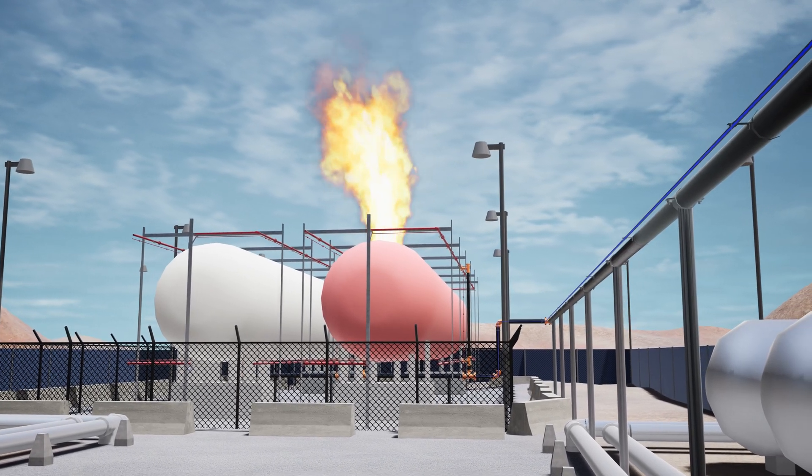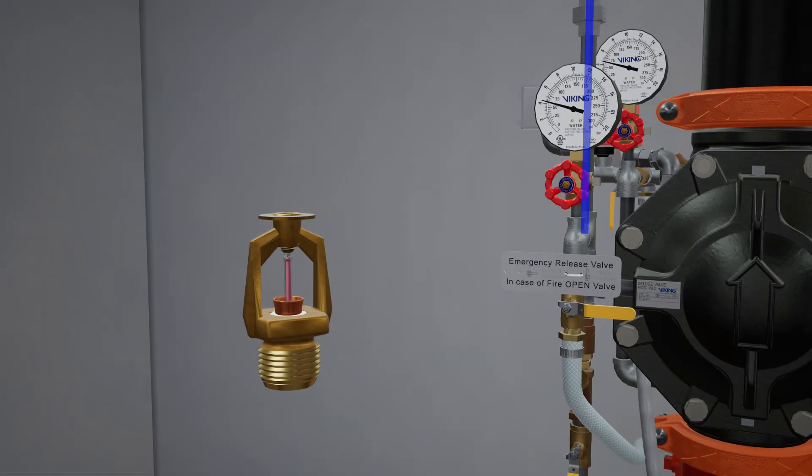In a scenario where a fire has started in or near the storage tanks and the heat increases, the VK800 fixed temperature release activates, releasing water pressure from the pilot line.